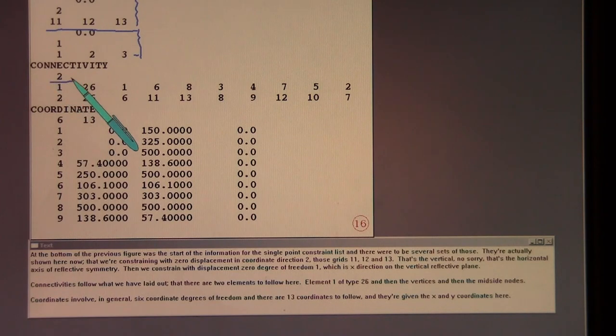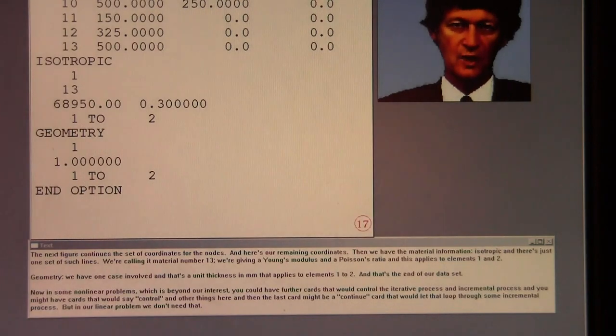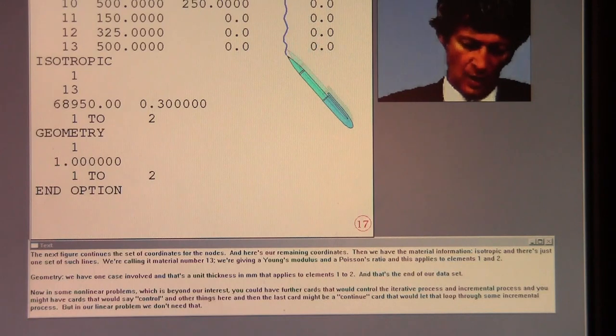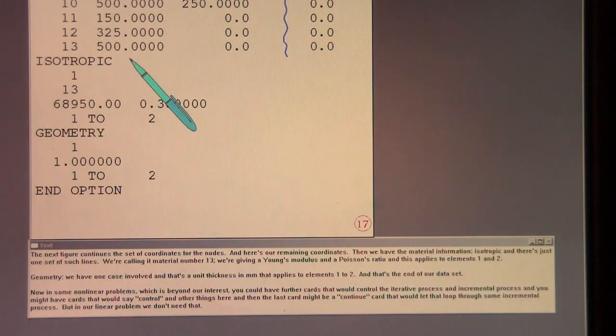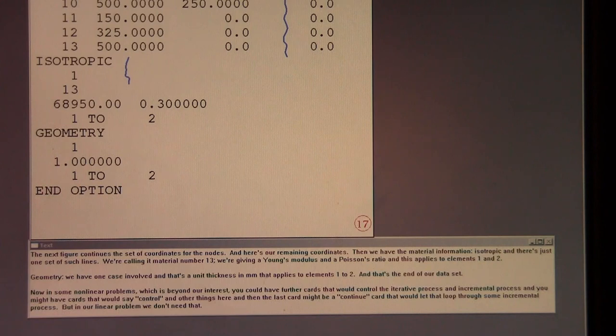Connectivities follow what we have laid out. That there are two elements to follow here. Element 1 of type 26. And then the vertices. And then the mid-side nodes. Coordinates involve, in general, 6 coordinate degrees of freedom. And there are 13 coordinates to follow. And they're given the x and y coordinates here.